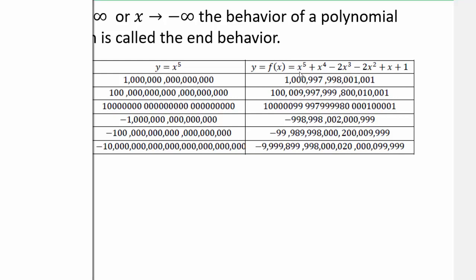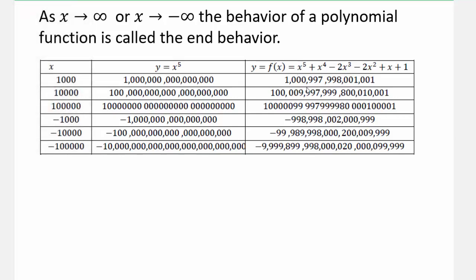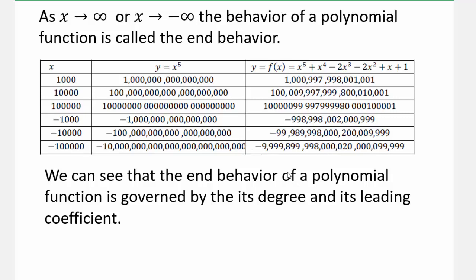With a positive coefficient, you get these values; if you make it negative, the signs reverse. So with an odd power, the left-hand and right-hand sides point in opposite directions. If the left-hand side is down, the right-hand side points up — to positive infinity. If you have a negative leading coefficient with an odd power, then the left-hand side points toward positive infinity and the right-hand side points toward negative infinity. End behavior is controlled by the degree and the leading coefficient.